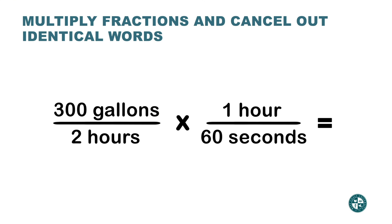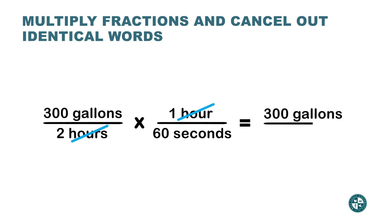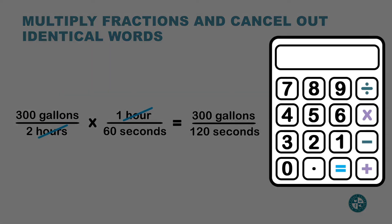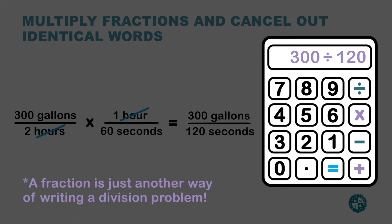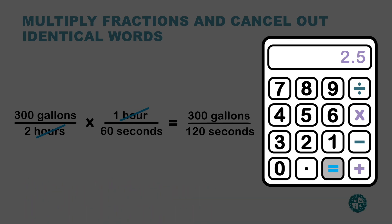For example, here the word 'hour' can cancel out with the 'hours' on the bottom, and there's nothing else I can do. Now multiply top with top: 300 gallons times 1, and bottom with bottom: 2 times 60 seconds. I get 300 gallons over 120 seconds. Now we need to simplify this fraction using a calculator: 300 divided by 120 gives 2.5. This rate fraction is now simplified as a decimal.